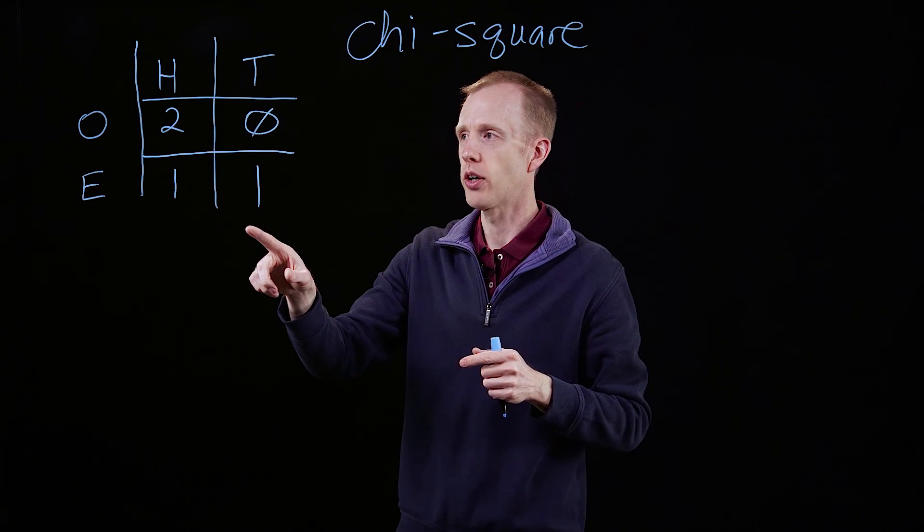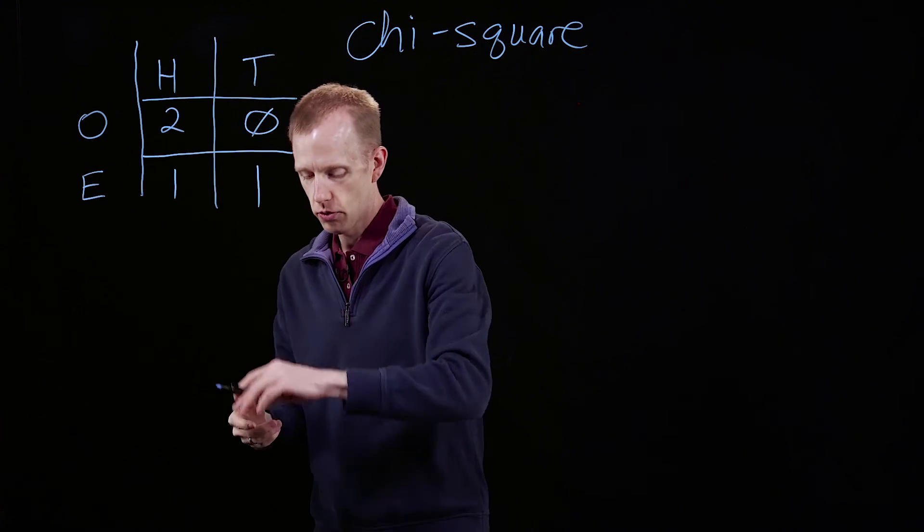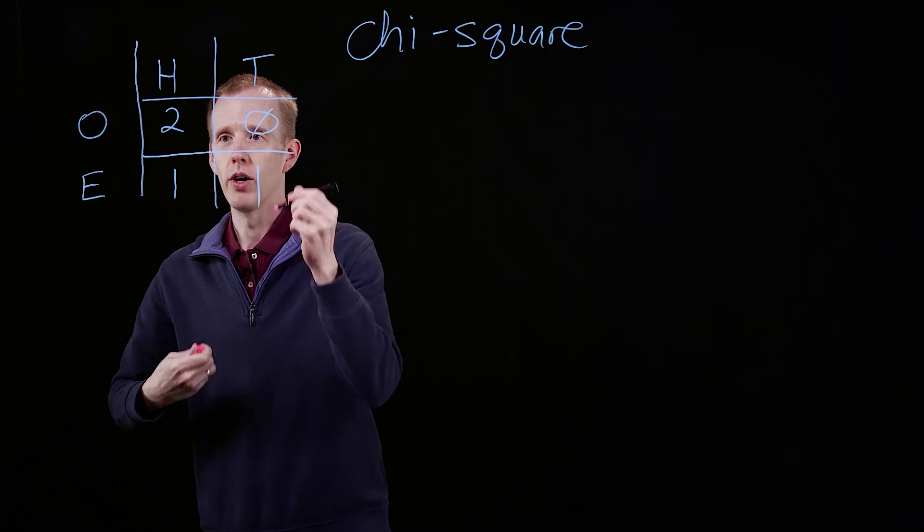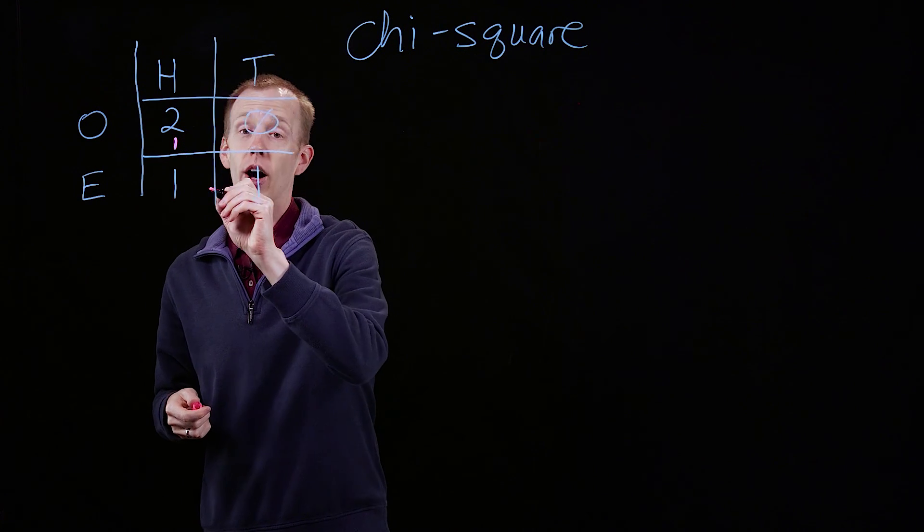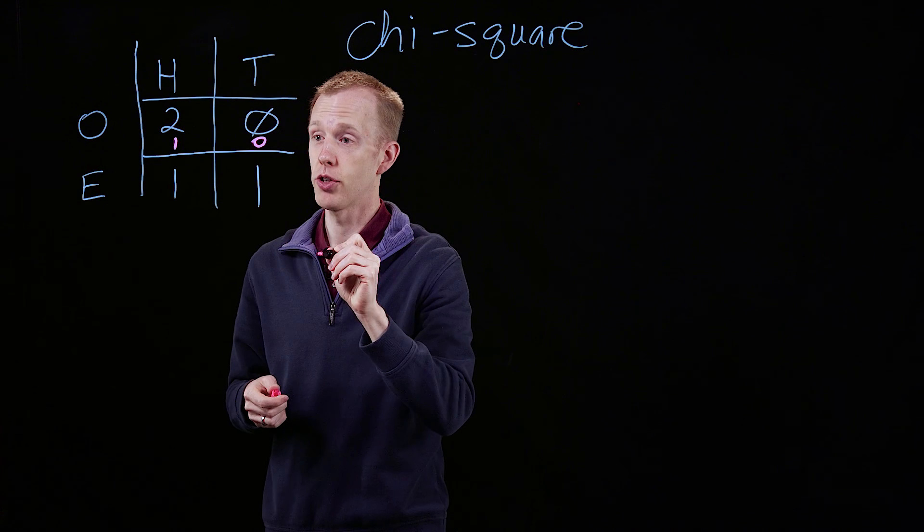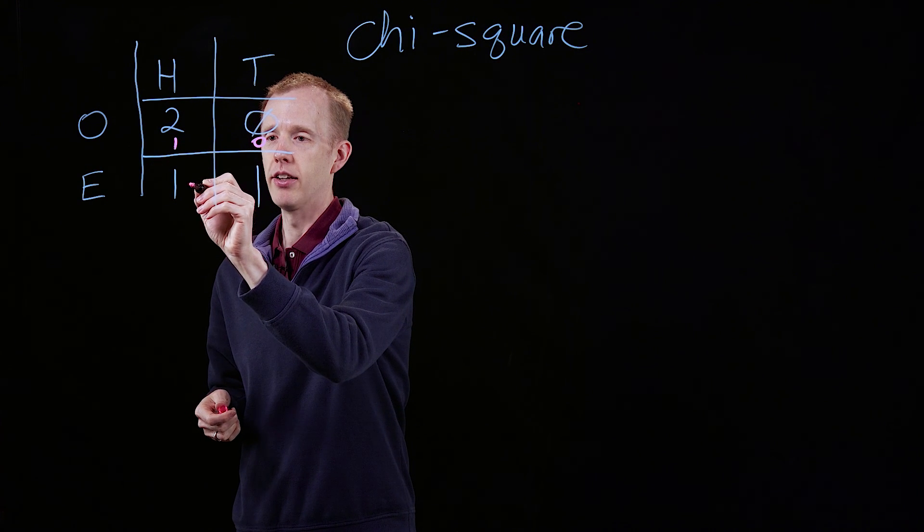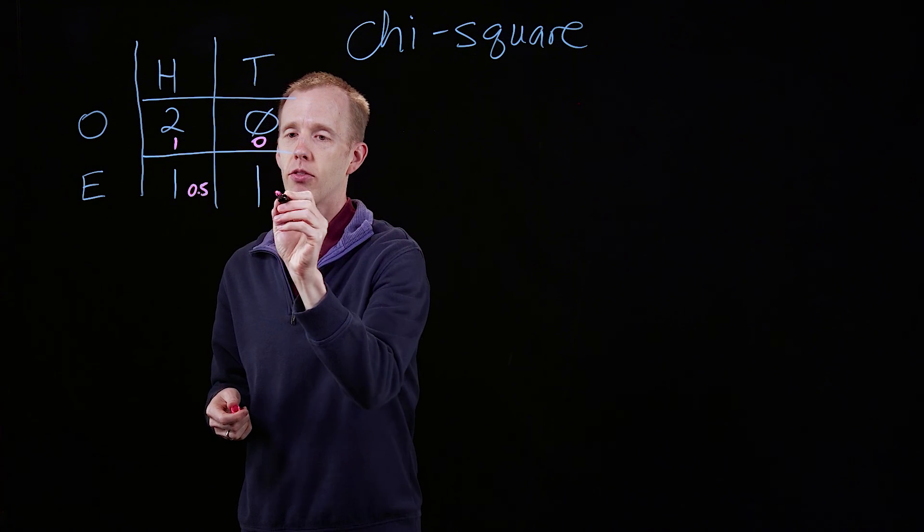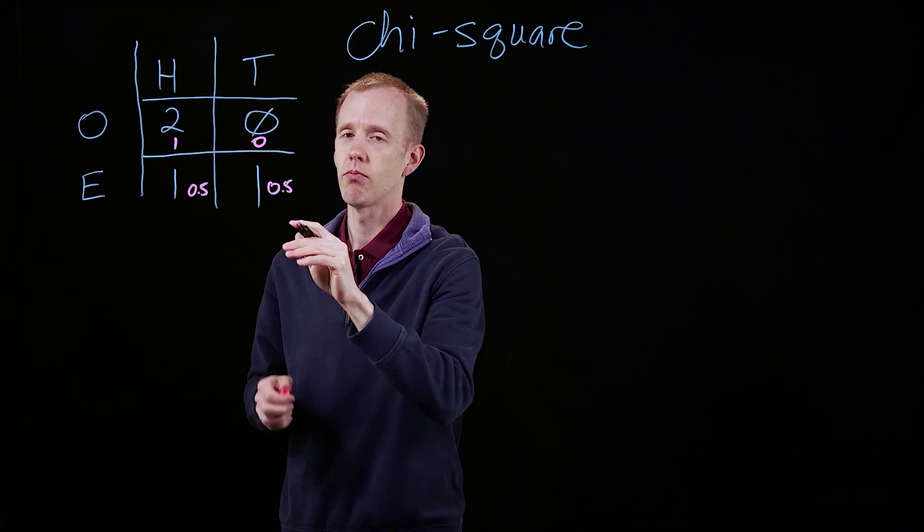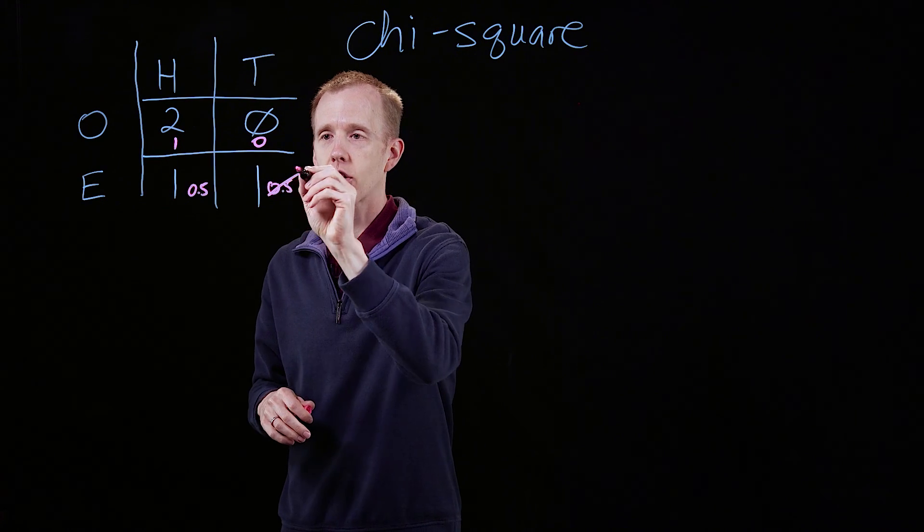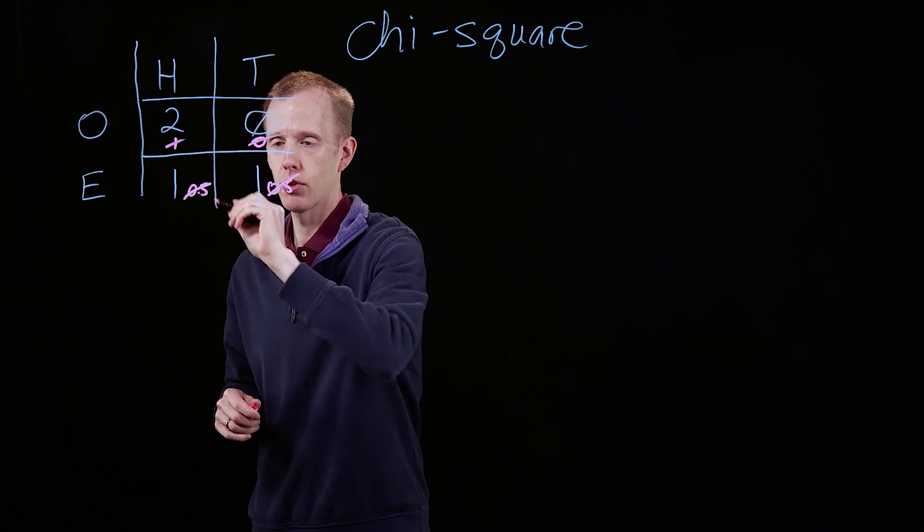We could not do a chi-square test if I said that this, for example, was the value 1 for 100%, 0 for 0% of the time, and 0.5 for 50% of the time. It doesn't work. You can't use fractions, or decimals, or percentages.